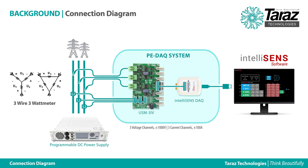The connections are made to measure voltages and currents in a three-wire, three wattmeter configuration. Since measurements are taken on phase currents and line-to-line voltages, a phase shift will exist between voltage and current waveforms.